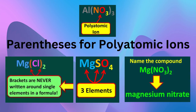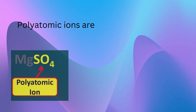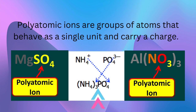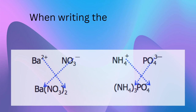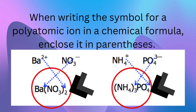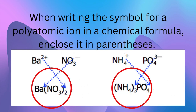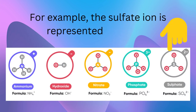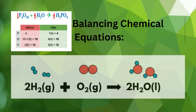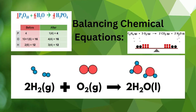Parentheses for polyatomic ions. Polyatomic ions are groups of atoms that behave as a single unit and carry a charge. When writing the symbol for a polyatomic ion in a chemical formula, enclose it in parentheses. For example, the sulfate ion is represented as SO₄²⁻.